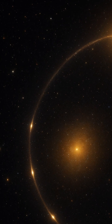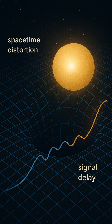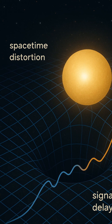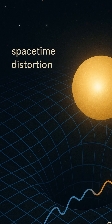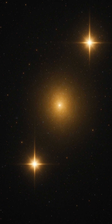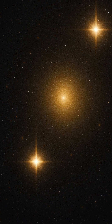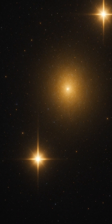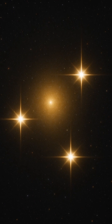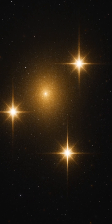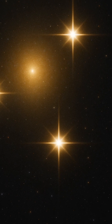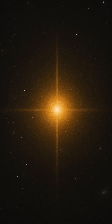Imagine a quasar billions of light-years away, emitting brilliant radiation across space. Now place a galaxy or galaxy cluster in the line of sight between the quasar and Earth. The gravity of that intervening mass doesn't just bend the quasar's light in a phenomenon known as gravitational lensing — it also slows the signal, causing a measurable delay in the arrival time of the photons compared to those taking an alternate path through less curved spacetime. These multiple lensed paths often produce several images of the same quasar, each with slightly staggered arrival times.